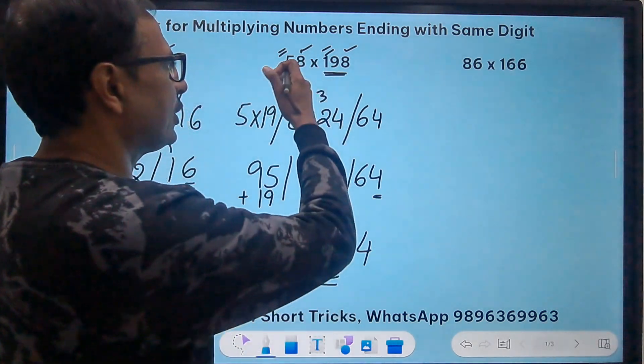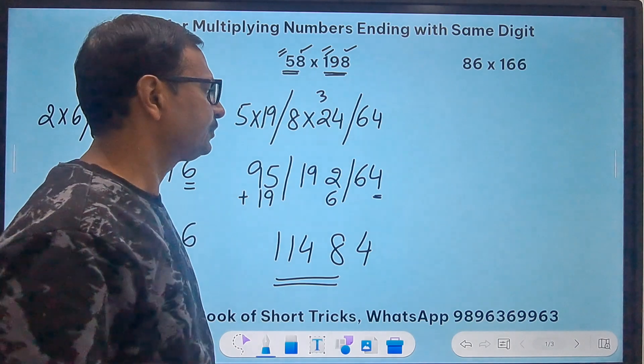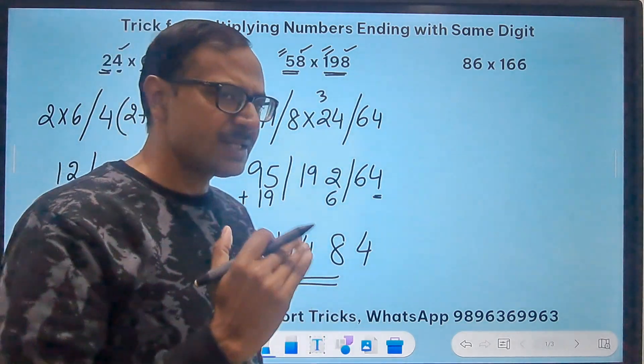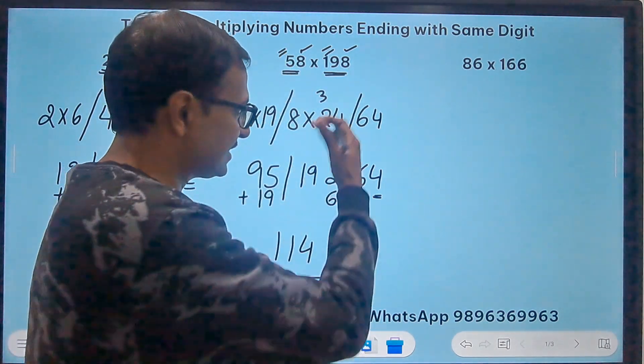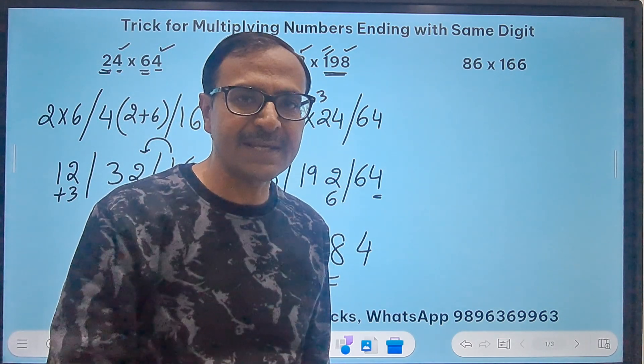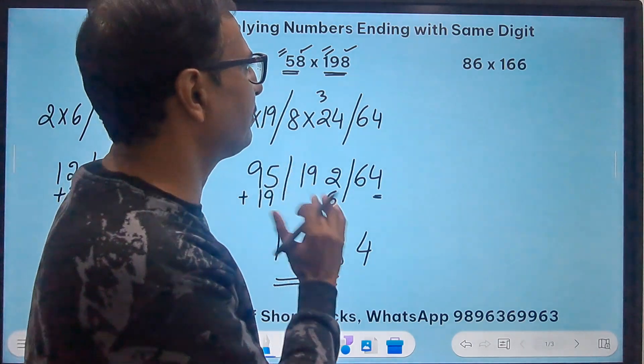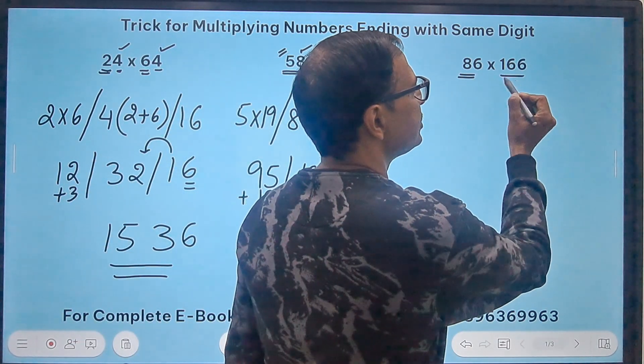With little practice the number of steps you are doing in the mind will keep on decreasing and so the time will be saved. Let's take another example of a two digit and a three digit number.